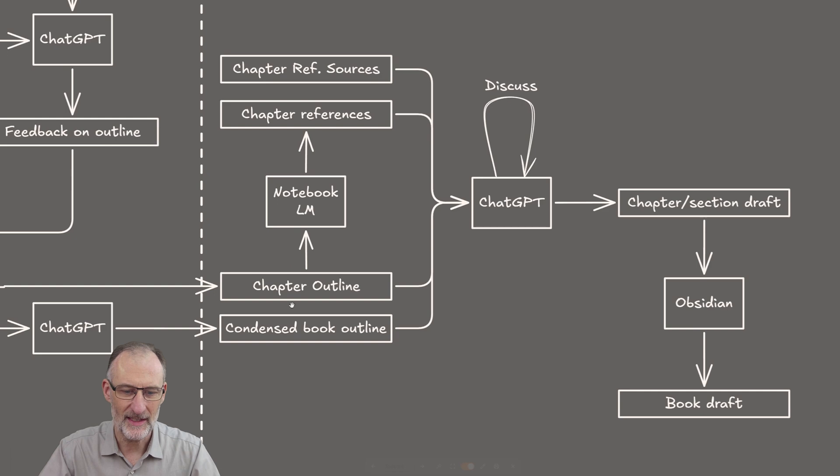The way the process works is, so I have the condensed outline, I also have the full book outline, and from the full book outline, I cut always the next chapter or the next section. And first of all, I feed that into Notebook LM to ask for chapter or section relevant references. And then I take those references, maybe some of the reference sources, as well as my chapter outline, the detailed one, and my condensed entire book outline, I feed it into my ChatGPT project.